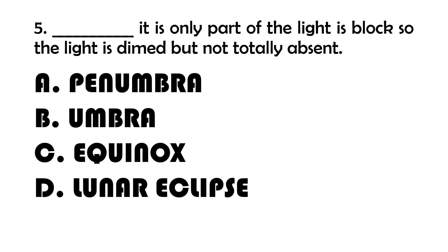Number 5. Blank — it is the part where only part of the light is blocked, so the light is dim but not totally absent. A. Penumbra. B. Umbra. C. Equinox. D. Lunar Eclipse.